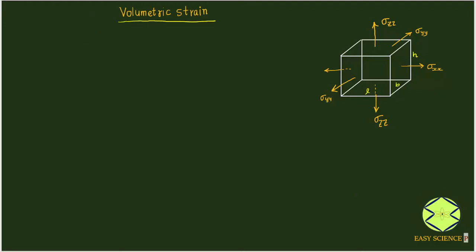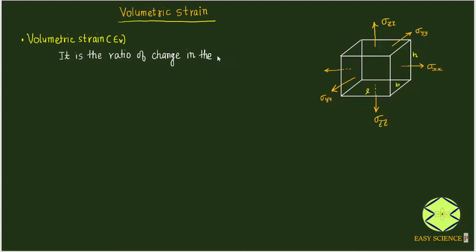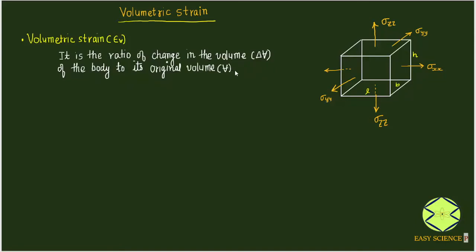Let us first define what volumetric strain is. We can represent it by epsilon v. Volumetric strain is the ratio of change in volume of the body — delta V — to its original volume V, when the body undergoes deformation.